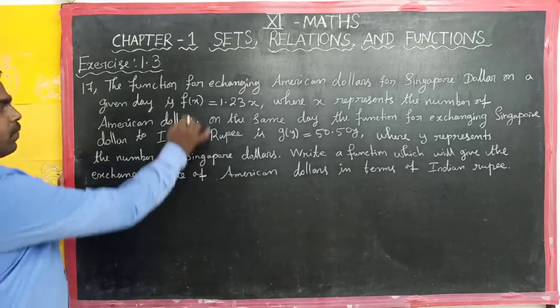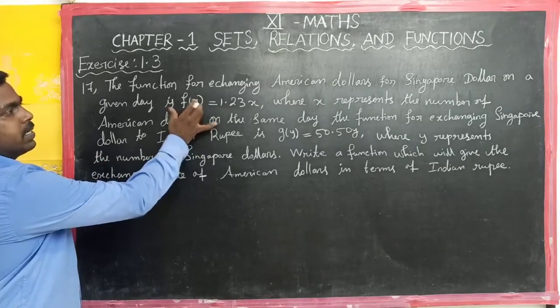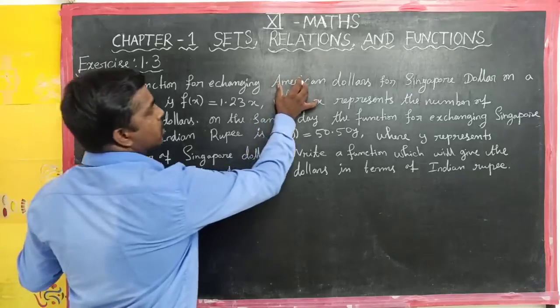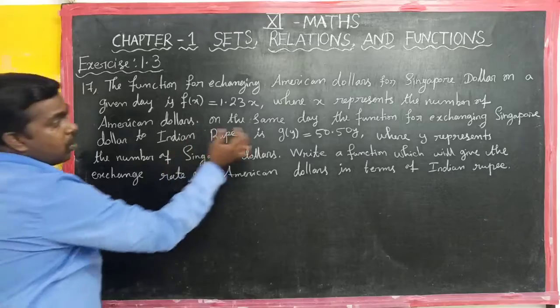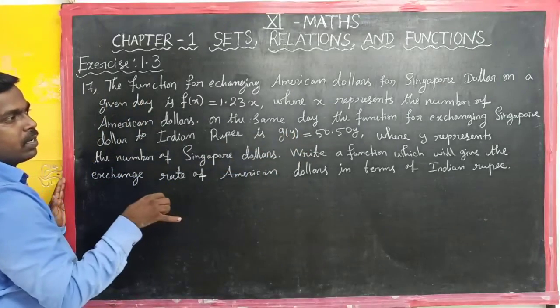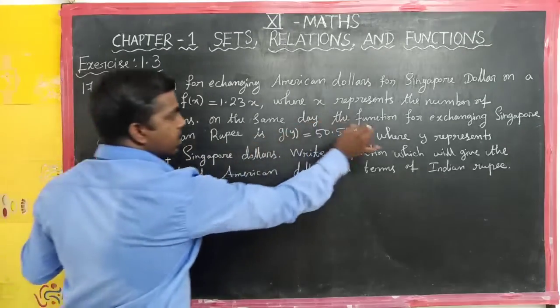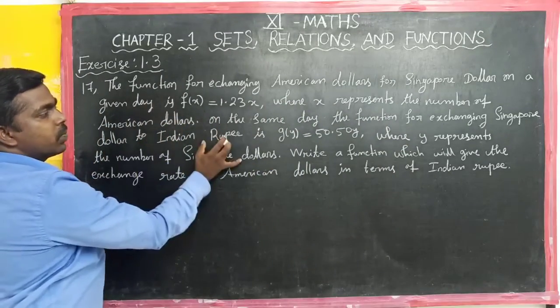Given is the f of function, it says we convert American dollars to Singapore dollar. Next, g of y is the function for exchanging Singapore dollar to Indian rupees.